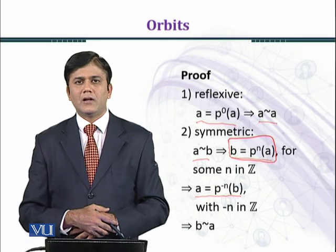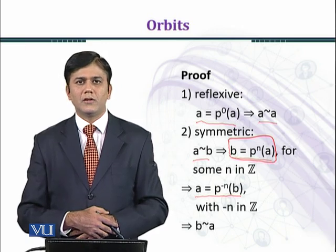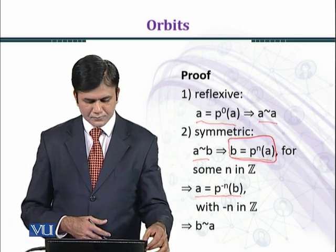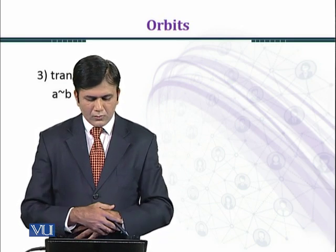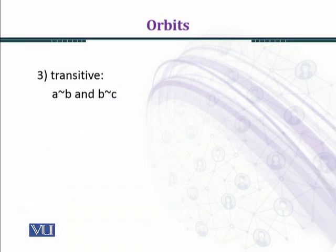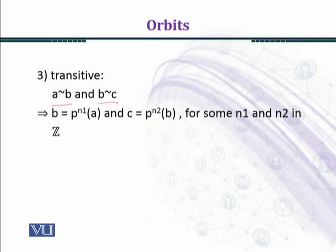Now in the next slide we shall prove the transitive property. To establish the transitive property we shall assume that A relates to B and B relates to C. By definition we have B equal to P raised to power n1 times A, and C equal to P raised to power n2 times B.